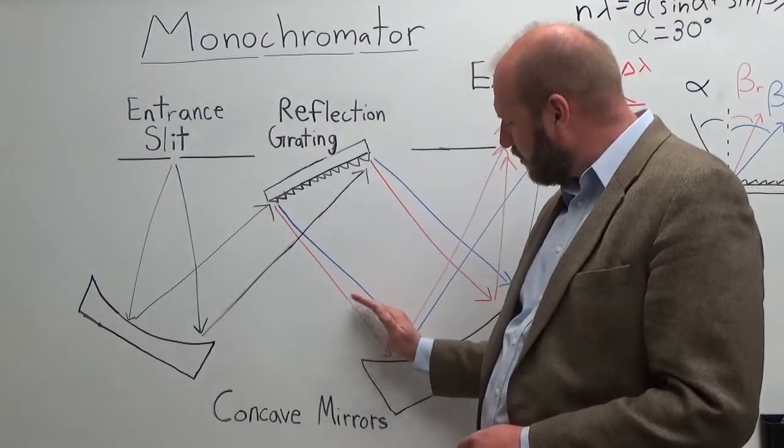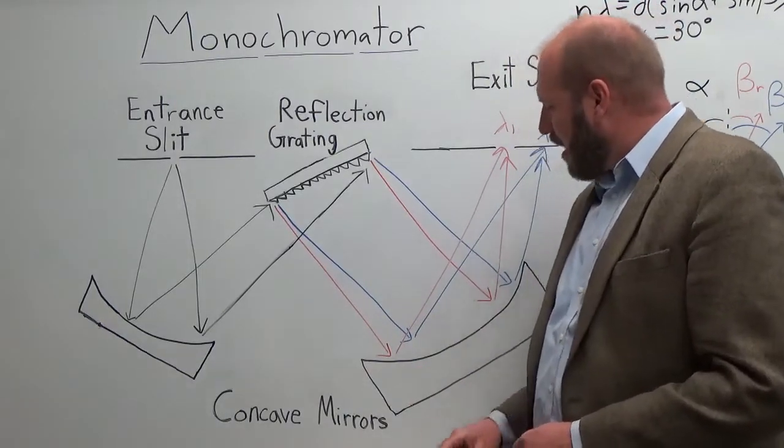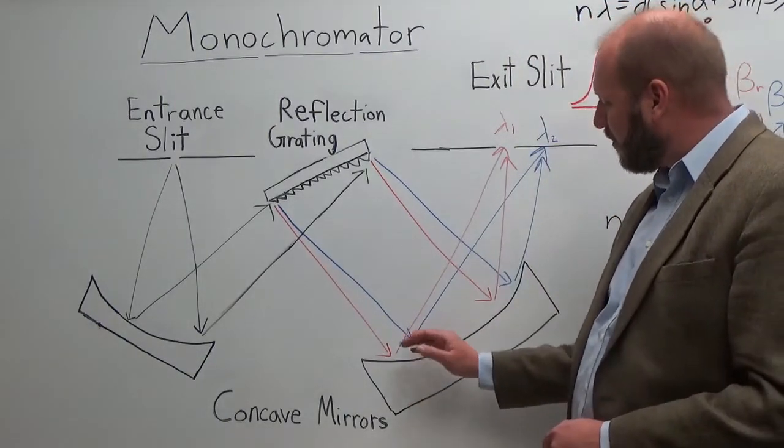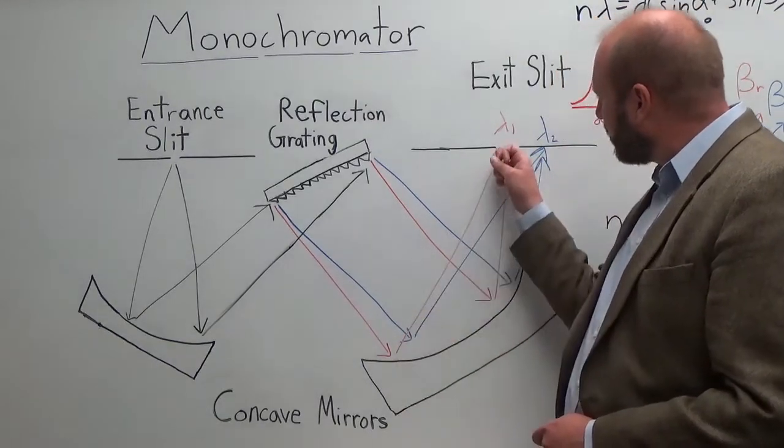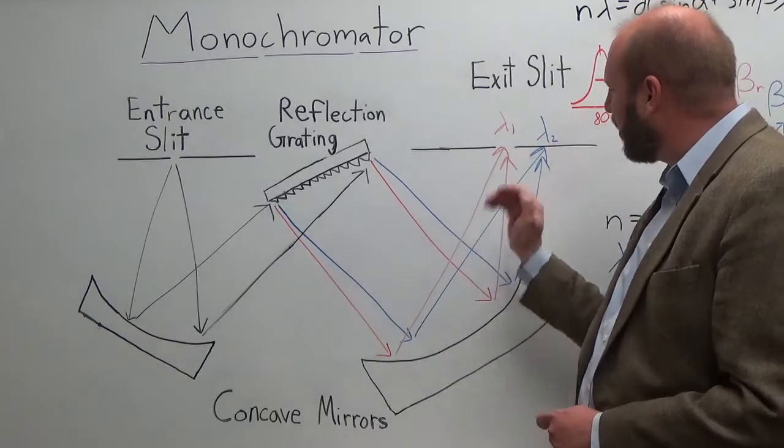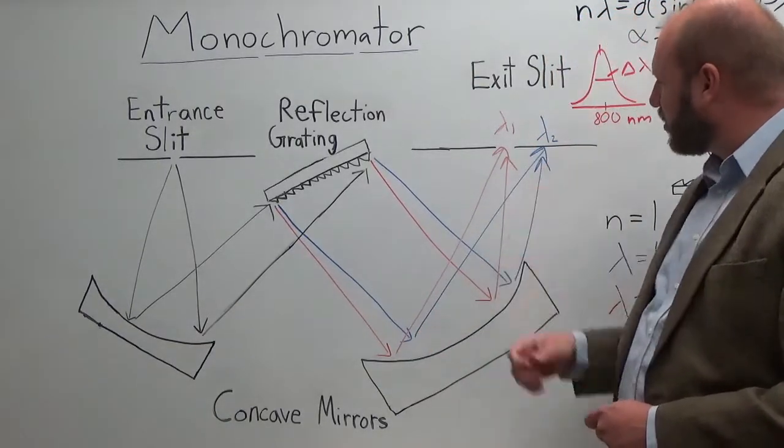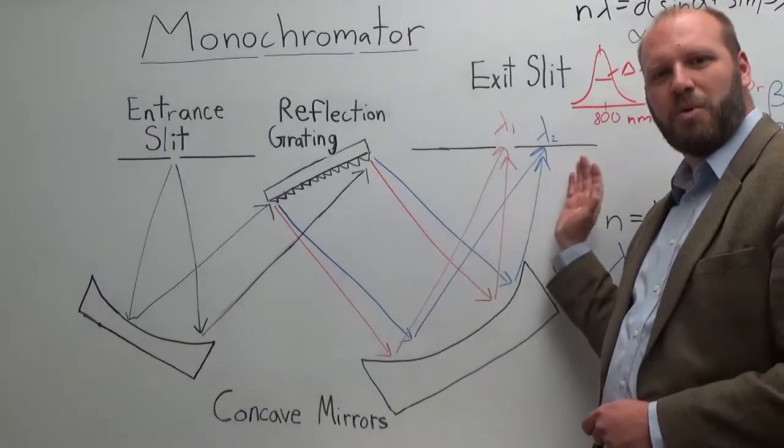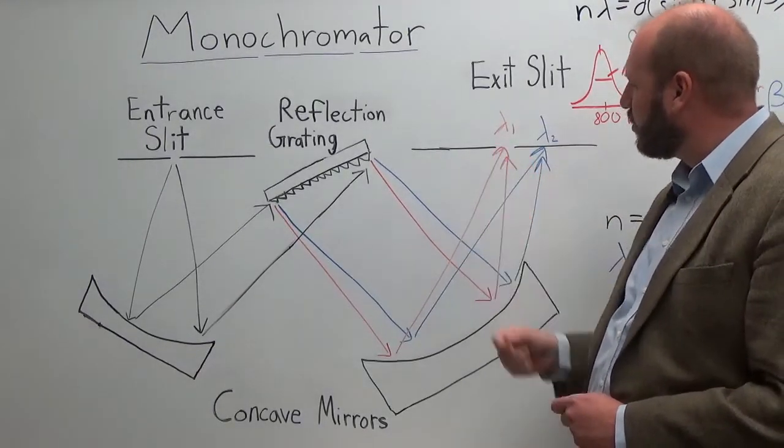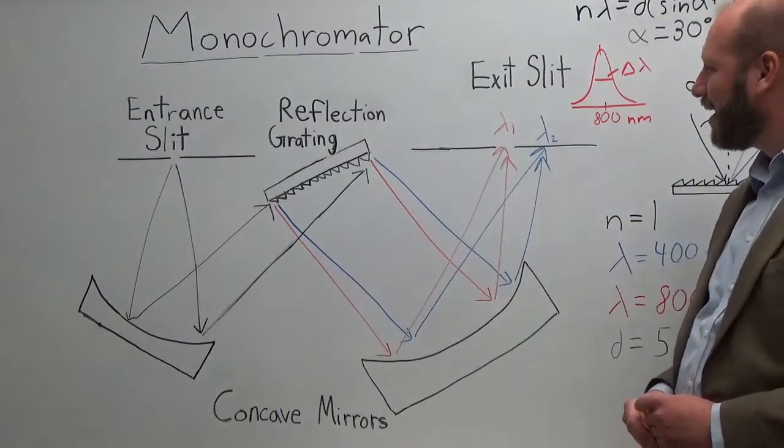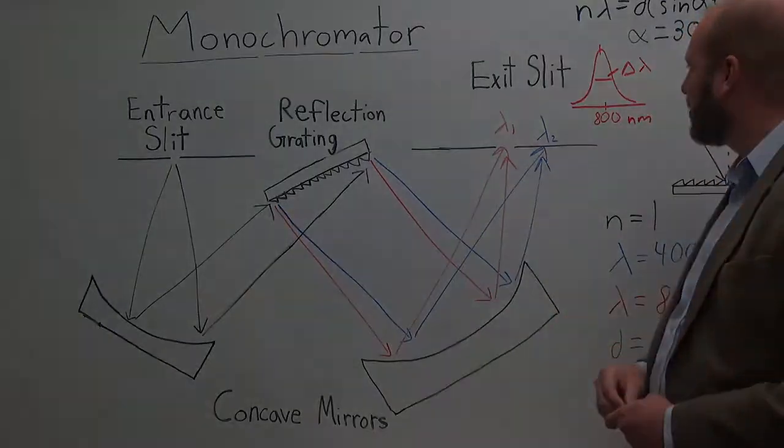So we have this spread of light that will then strike another mirror, a concave mirror. And this mirror's job is to focus the light onto an exit slit. Here the red light is going to be focused right at our exit slit so it will be allowed to come out of our monochromator. And our blue light is going to be focused to a different point. It's going to hit the wall and not exit our monochromator. So our exit slit will set a certain range of wavelengths that are allowed to exit. We then use this light to make our chemical measurement on the other side.